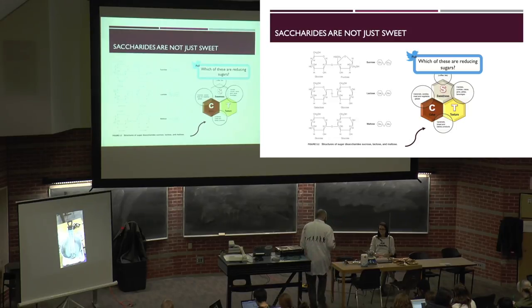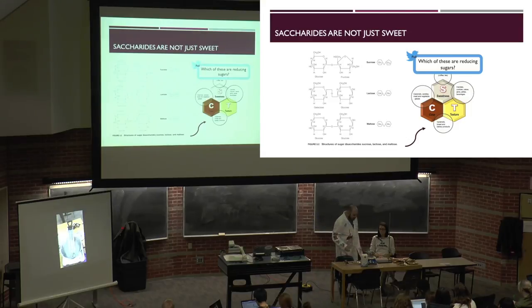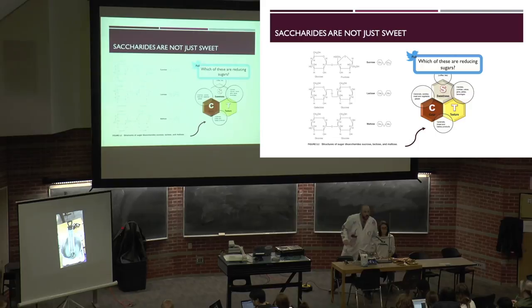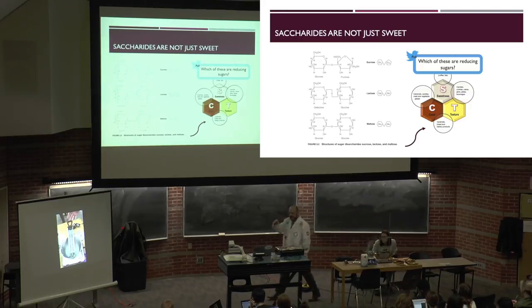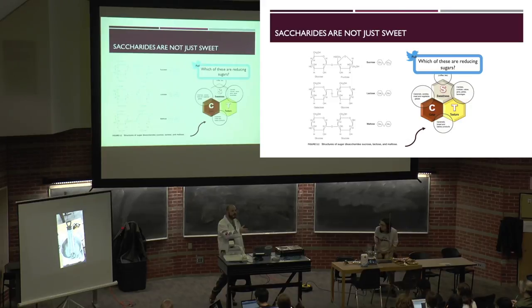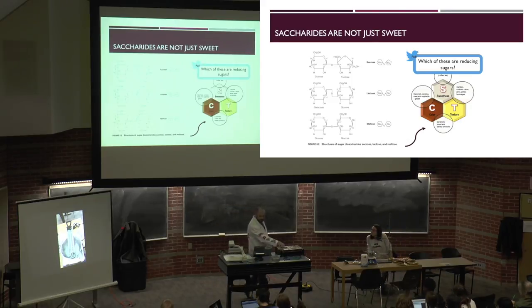We have a pot of boiling water here, just at 100 degrees Celsius — pure water. Once it gets to 100 degrees Celsius, we'll add sugar, and the addition of that sugar is going to elevate the boiling point. We'll get to that in a minute.